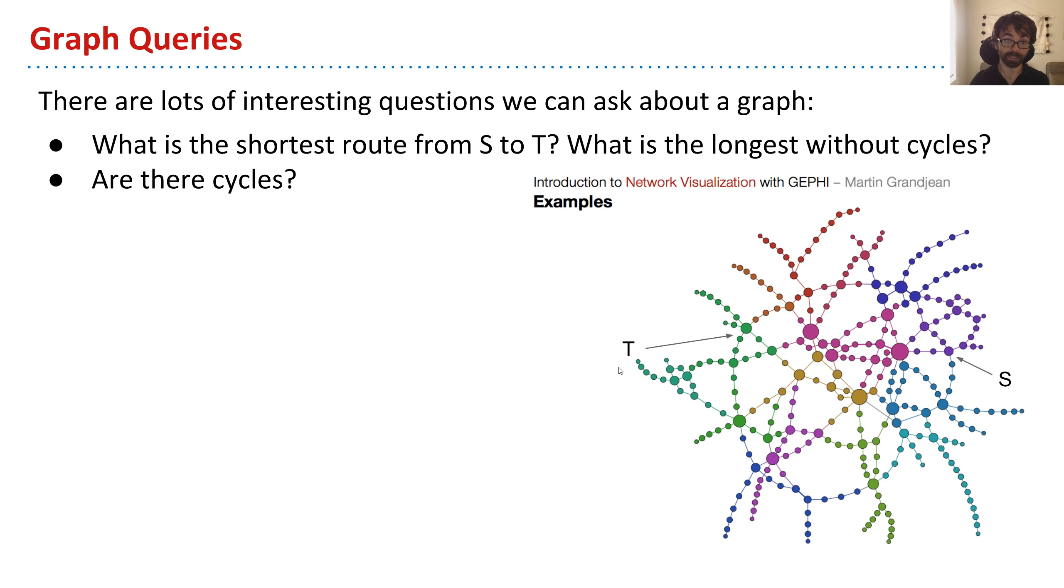So for the Paris Metro, there clearly do exist cycles. But for other types of graphs, maybe that's not so clear. How do you know when you're running on a computer whether there are cycles? That's an algorithm you might need to develop.